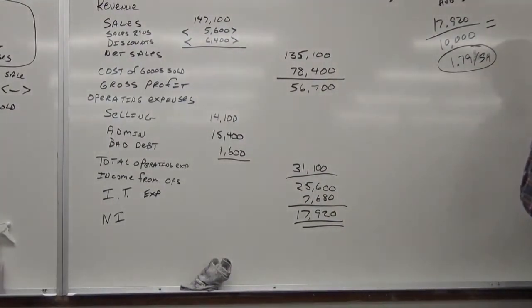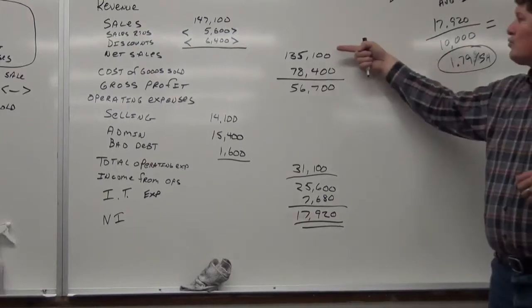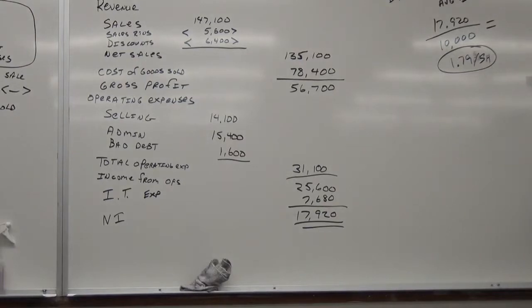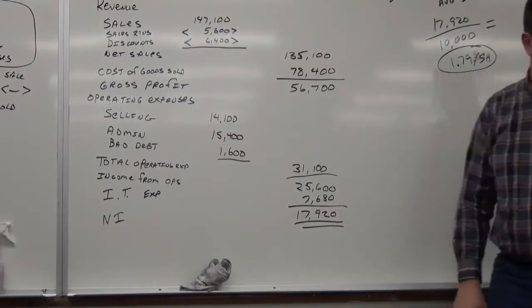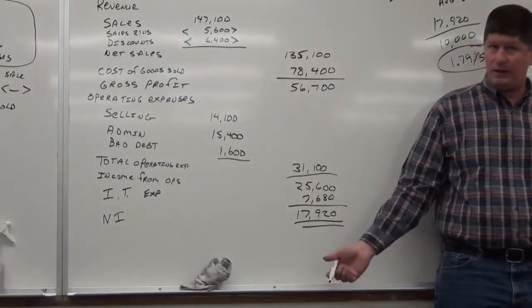So, in this case, net income is $17,920 divided by, the number of shares given was $10,000, I believe, right? And, what does that equal? 1.792. Yeah. That's $1.79 per share. Okay. Then, they wanted us to calculate receivables turnover. Yes. Okay. What's the formula for receivables turnover?